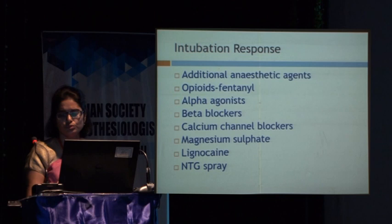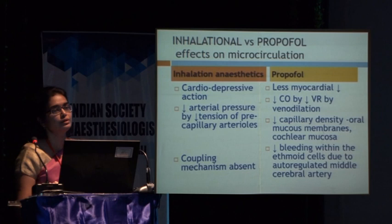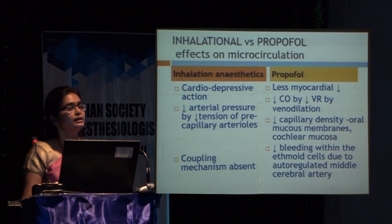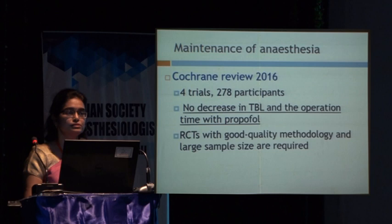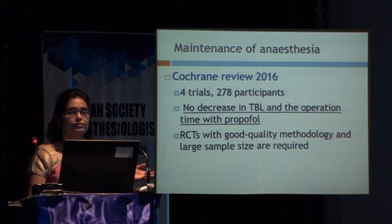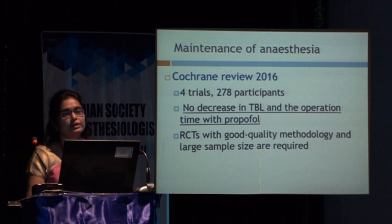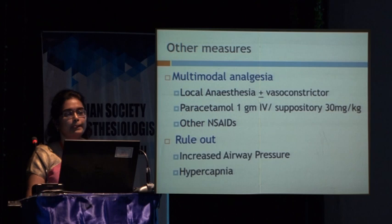For intubation response, all traditional techniques can be used. For maintenance of anesthesia, research has shown propofol causes less myocardial depression, decreases cardiac output and capillary density, and bleeding within ethmoid cells is less because it is auto-regulated. However, the recent Cochrane review notes only four trials exist with none since 2013, and there is no decrease in total blood loss — field condition is better but operative time has not improved. More RCTs are recommended, but considering waste gases with inhalation agents, propofol is preferred for nasal endoscopy.